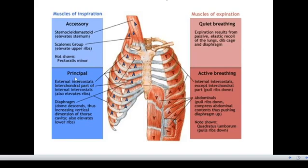The principal muscles of inspiration are the external intercostal muscles and the interchondral part of the internal intercostal muscles — they also elevate the ribs. The external intercostal muscles are responsible for both forced and quiet inhalation. They raise the ribs and expand the chest cavity. When the ribs are raised, the chest cavity expands, volume increases, but pressure reduces — that's why they are involved in inspiration.